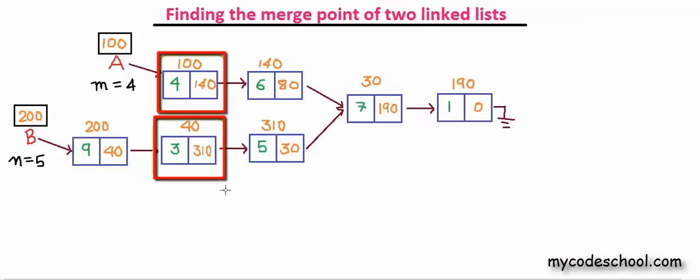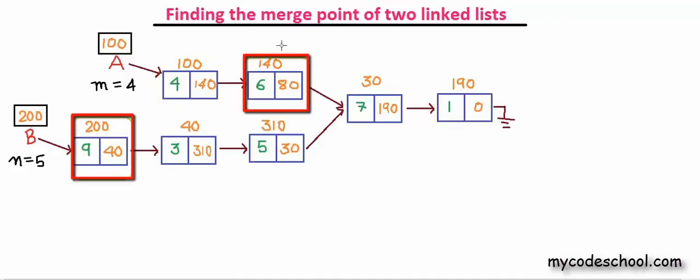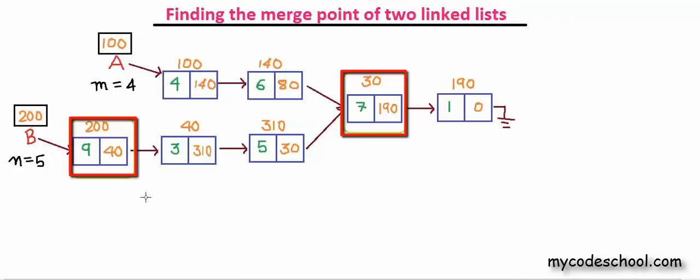Then 100 with 40, 100 with 310, with 30 and finally with 190. We didn't find any match. We do the same thing with this node but there is no match. Then we start comparing 30 with each of list B nodes. And finally we reach a matching node. So this becomes our merge point.